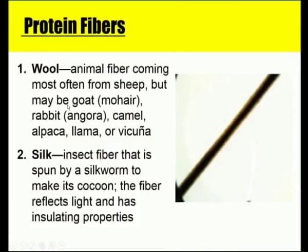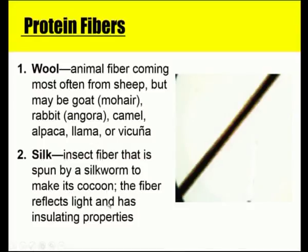Protein fibers are obtained from animal origin, such as wool and silk. Wool is an animal fiber coming most often from sheep, but may also come from goat (mohair), rabbit (angora), camel, alpaca, llama, or vicuña. Silk is an insect fiber spun by the silkworm to make its cocoon; the fiber reflects light and has insulating properties.